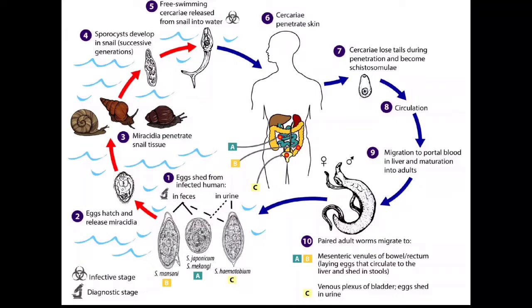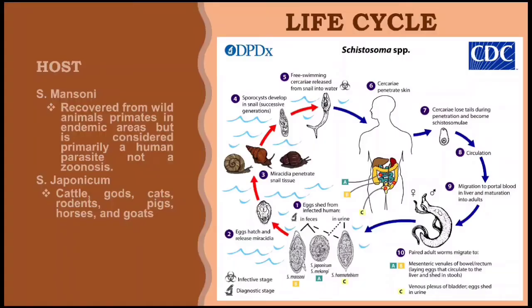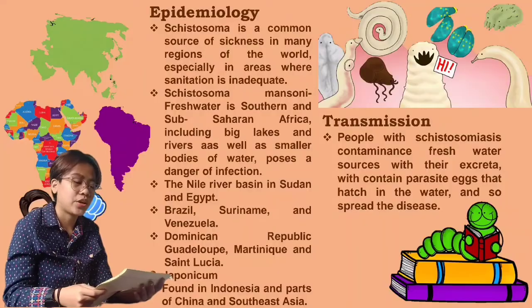Both species may live in either place and can move between them. For the host, Schistosoma mansoni has been recovered from wild primates in endemic areas, but is considered primarily a human parasite and not a zoonosis. For Schistosoma japonicum, reservoir hosts include cattle, dogs, cats, rodents, pigs, horses, and goats.